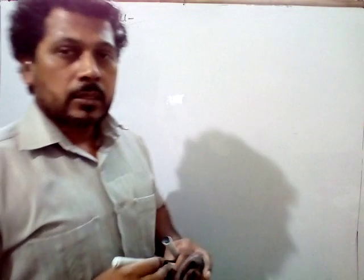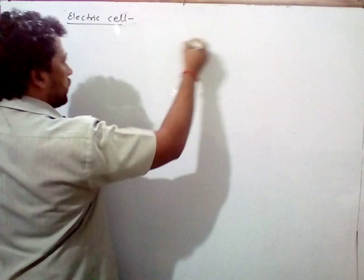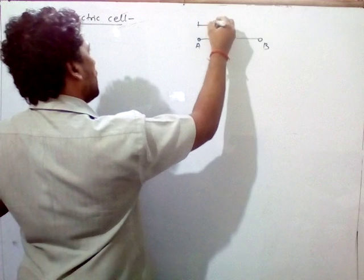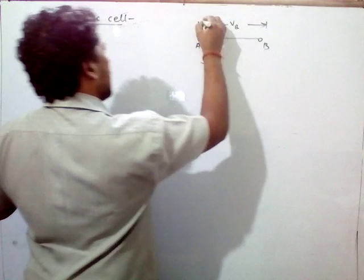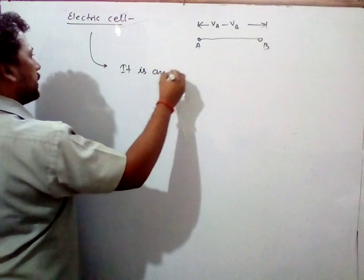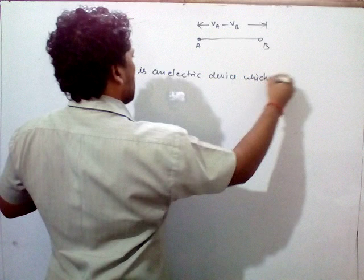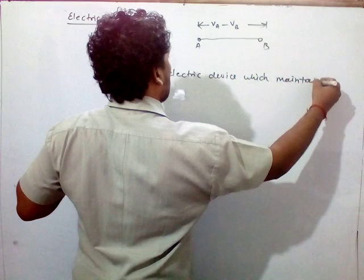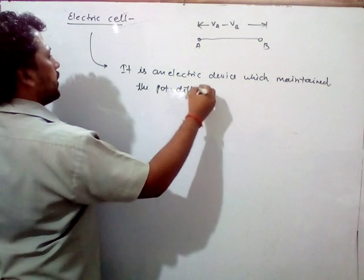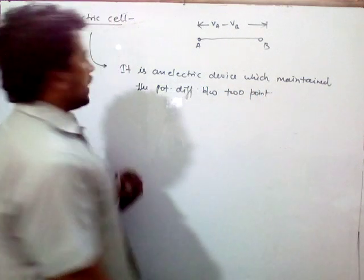So, what is an electric cell? It is a device which maintains the potential difference between two points, like points A and B.